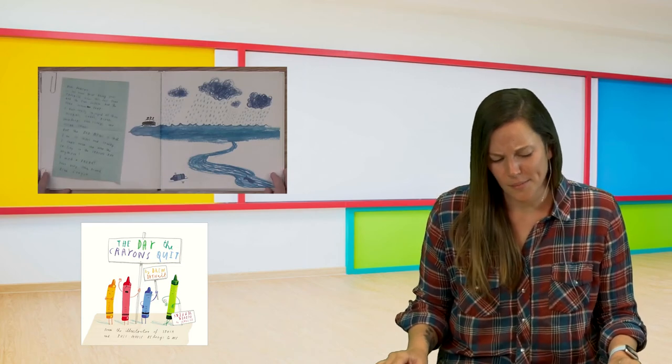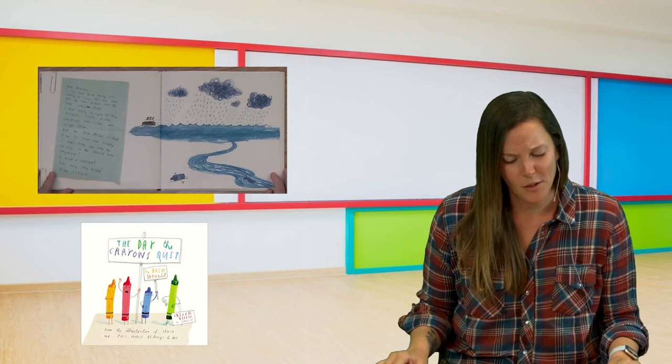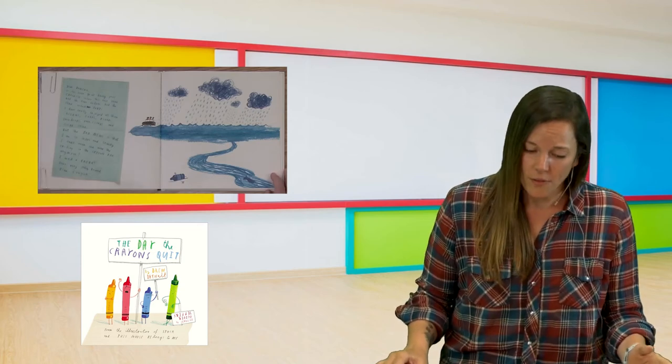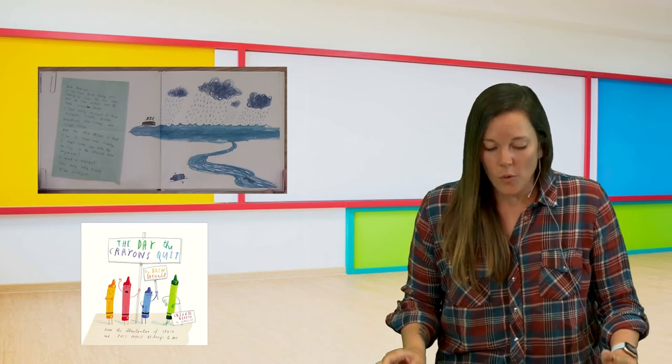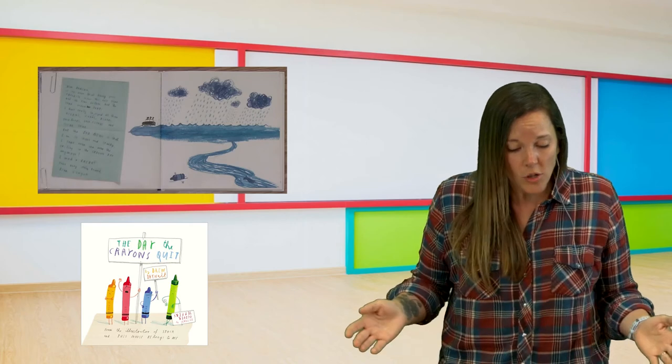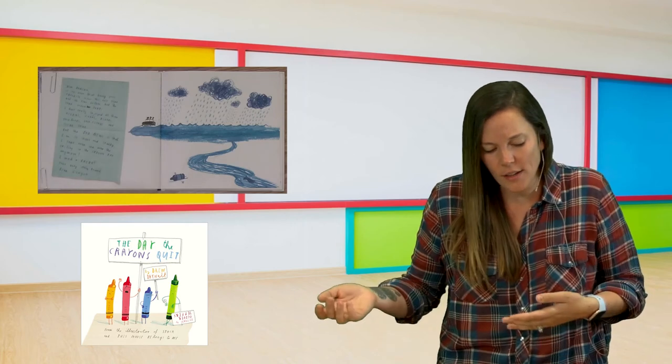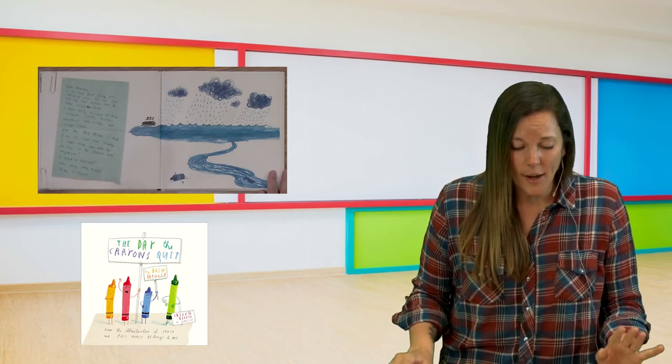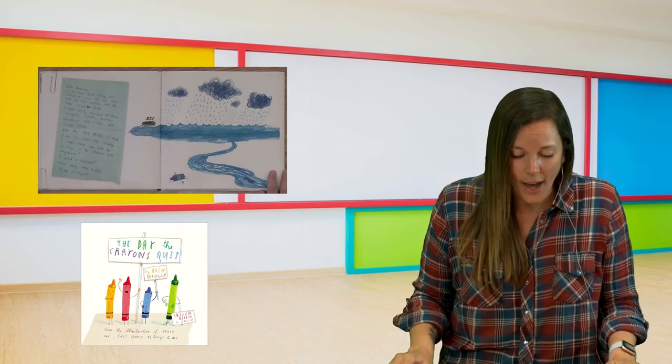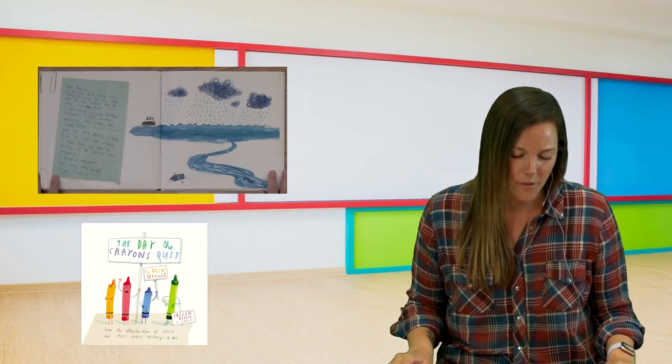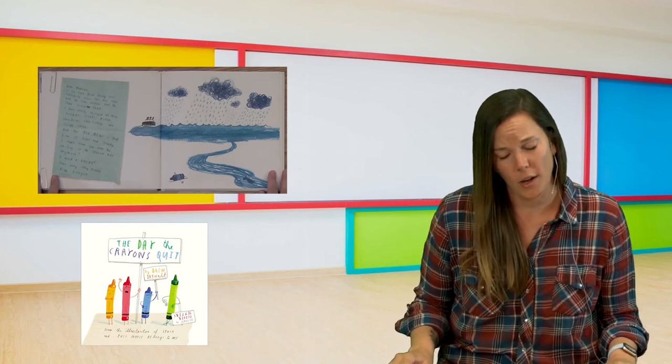Dear Duncan, it's been great being your favorite color this past year. And the year before. And the year before that. And I've really enjoyed all those oceans, lakes, and rivers, and raindrops, and rain clouds, and clear skies. But the bad news is that I'm so short and stubby, I can't even see the railing in the crayon box anymore. I need a break. Your very stubby friend, Blue Cram.